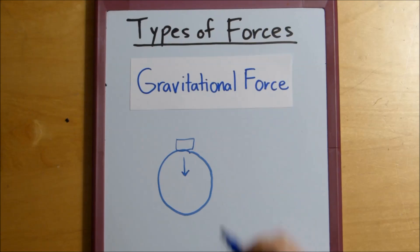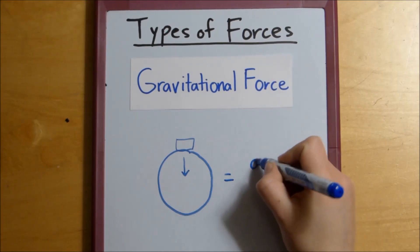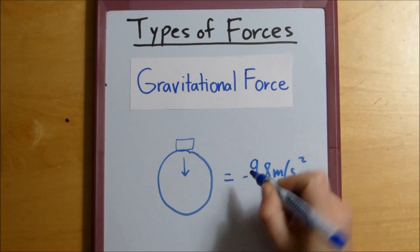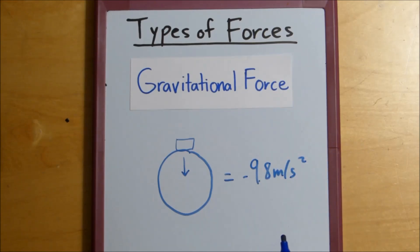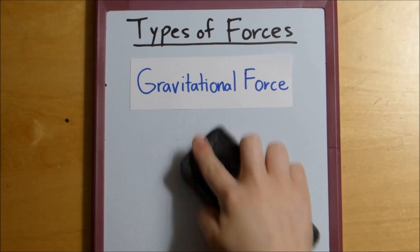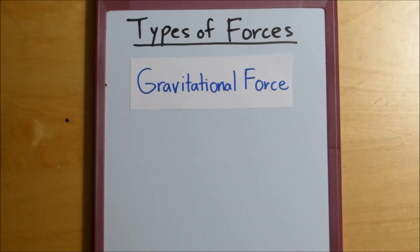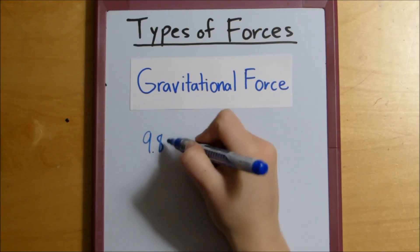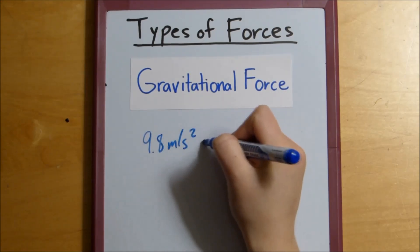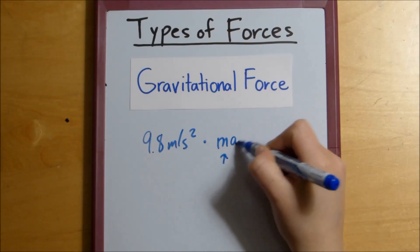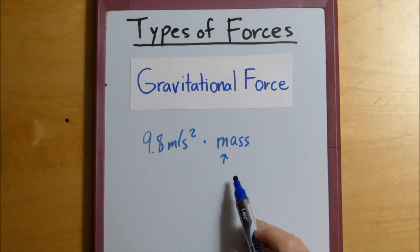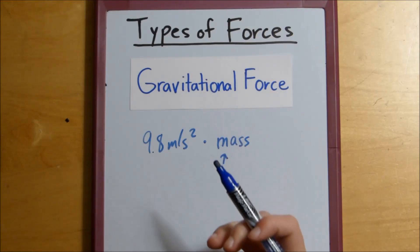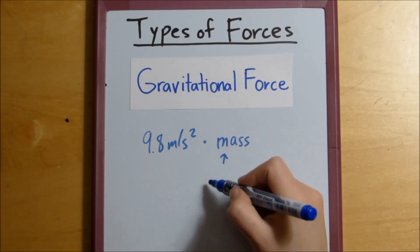So we know that gravity on Earth is 9.8 meters per second squared, or negative 9.8 meters per second squared, depending on your frame of reference. And the gravitational force can be found by multiplying 9.8 meters per second squared times the mass of the object that the gravitational force is being applied on. So not the mass of the Earth, the mass of the box.